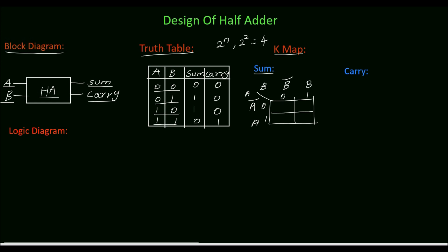Next we will fill the cells. For input 00 the sum is 0, so for 00 write 0. For 01 sum is 1, so write 1 here. For 10 sum is 1, so write 1. For the input combination 11 sum is 0, so write 0.